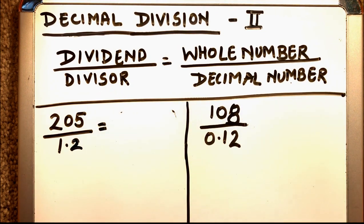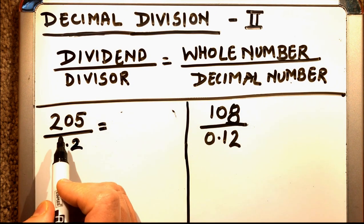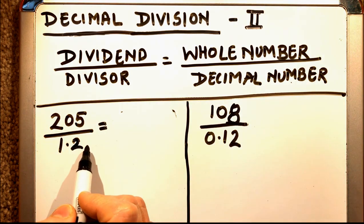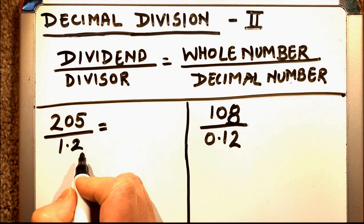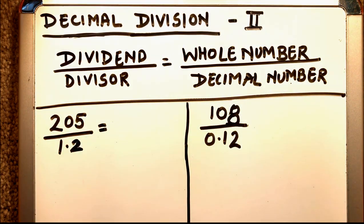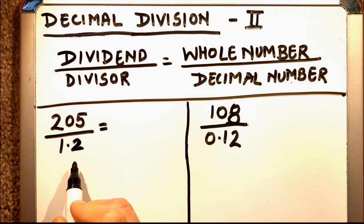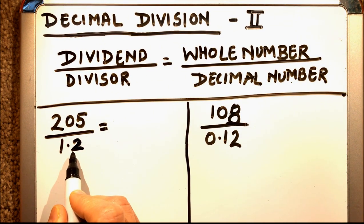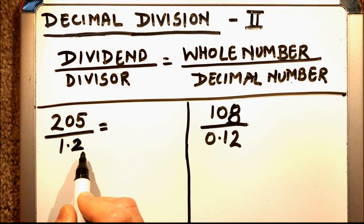So let's get started. Let's have an example: 205 divided by 1.2. It will be very difficult to count the tables of 1.2. Instead it will be easy to count the tables of a whole number.